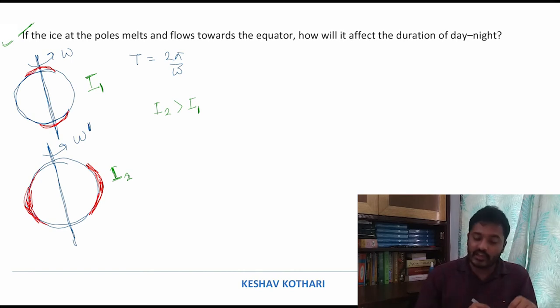Since there is no external agent involved here, I can apply angular momentum conservation for the two cases. If I conserve angular momentum, I can write it as I₁ω₁ equals I₂ω₂. And since I₂ is greater than I₁, I will say that ω₂ will be less than ω₁.